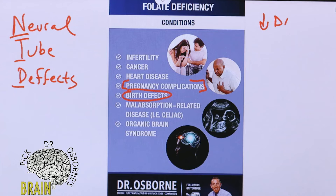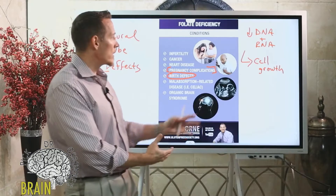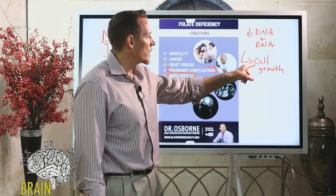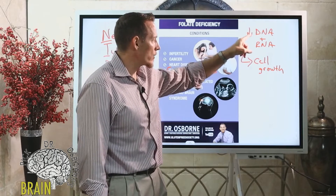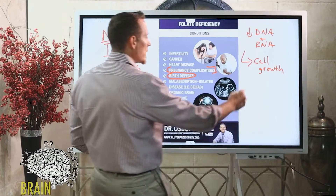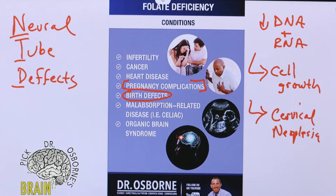Folate deficiency leads to poor ability to replicate DNA and RNA. This matters because DNA and RNA replication drives cell growth — and there's no time in life when cell growth is more rapid than in a developing fetus. Those rapidly dividing cells require a lot of folate. It's not just cell growth but normal cell growth — because if you've been diagnosed with cervical neoplasia, also called cervical intraepithelial neoplasia or CIN, folate plays a role in that condition.